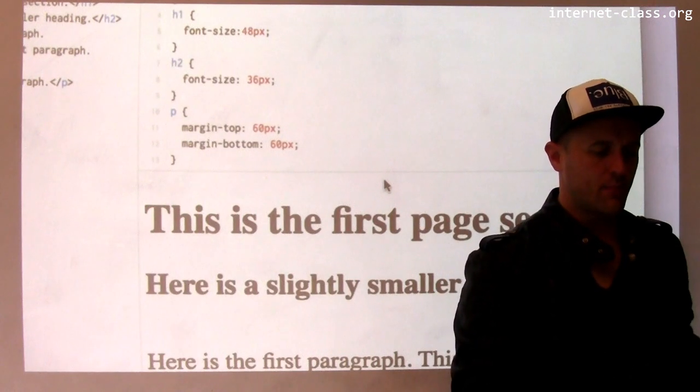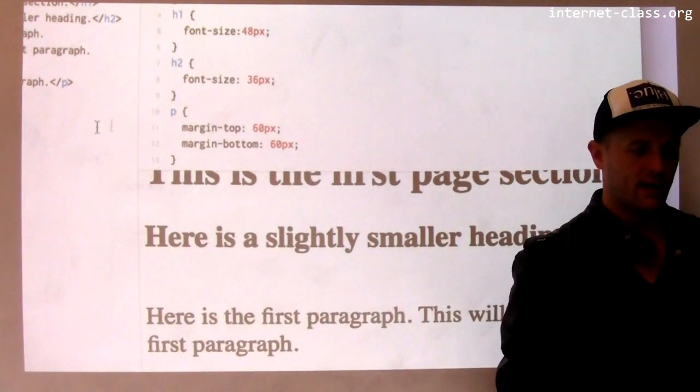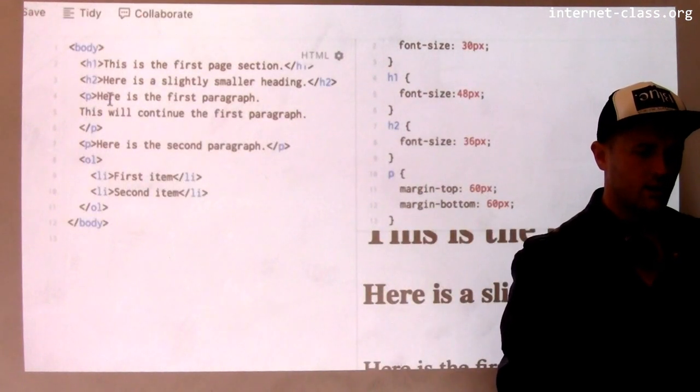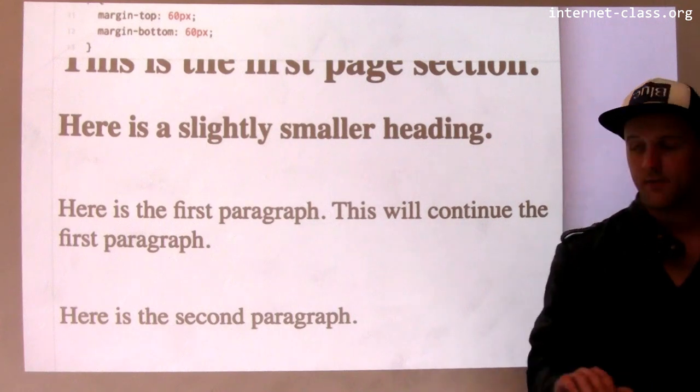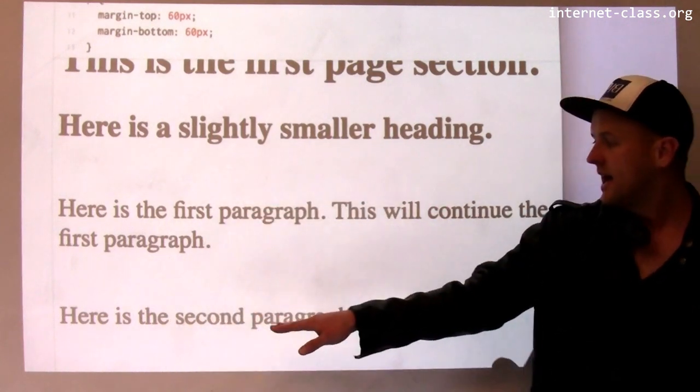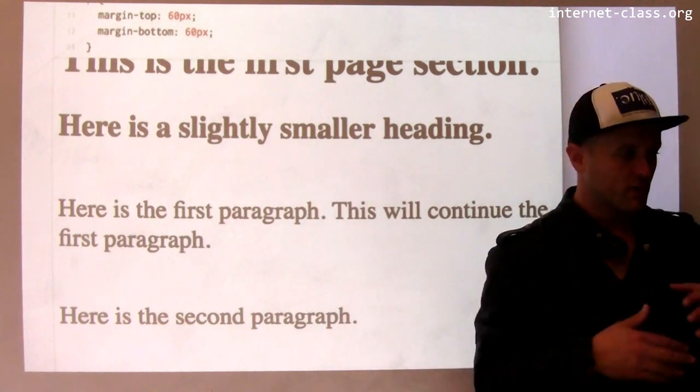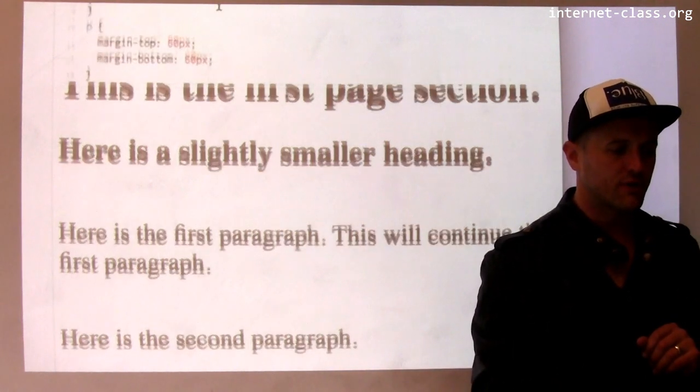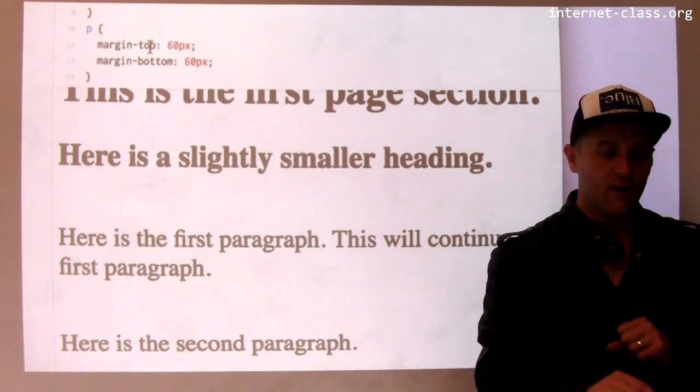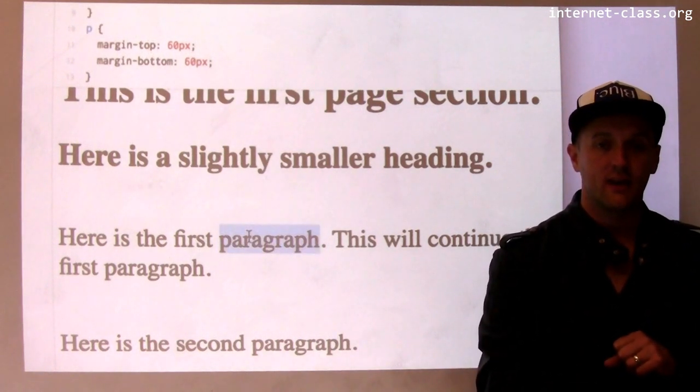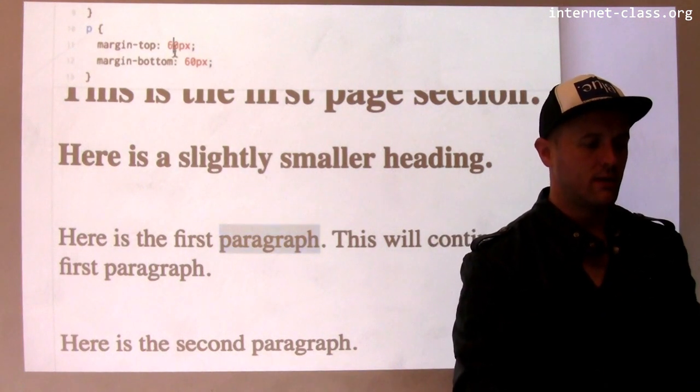Okay. Great. So now what you can see happening is that these paragraphs down here. Remember that I have here is the first paragraph. This will continue the first paragraph in my first paragraph. That's right here. So this is the first paragraph. And then this is the second paragraph. And what I did, again, using CSS, was I controlled how much vertical space there was. So I set margins at the top and bottom of each one of these paragraph objects. And I made those margins bigger than they were before. And as I do that, they go farther apart.